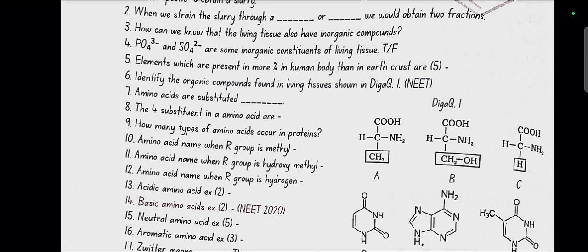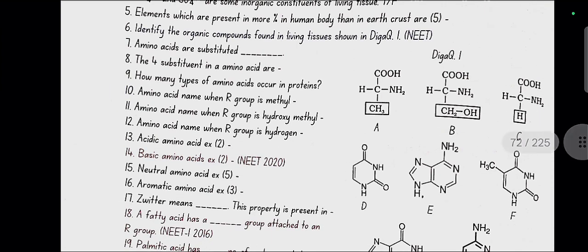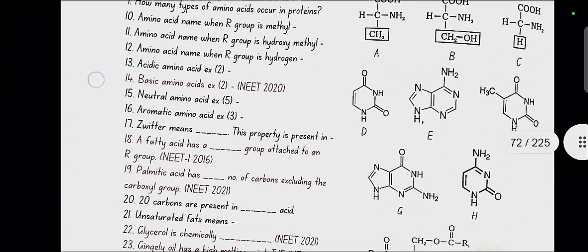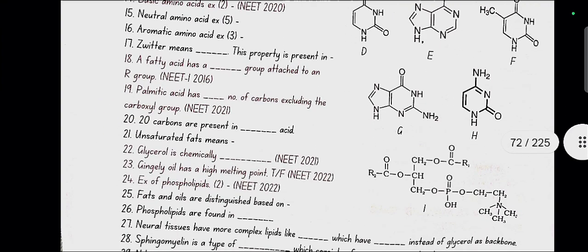Identify the organic compounds found in living tissue shown in diagram 1. So here in diagram 1, A is alanine, B is serine, C is glycine, D is uracil, E is adenine, F is thymine, G is guanine, H is cytosine, I is phospholipid, lecithin.